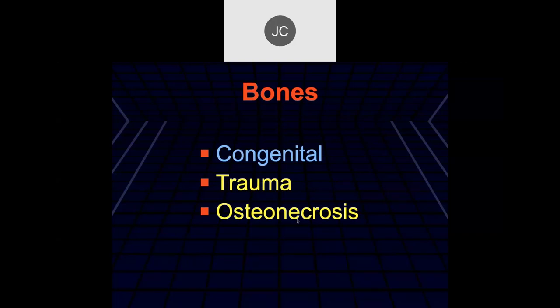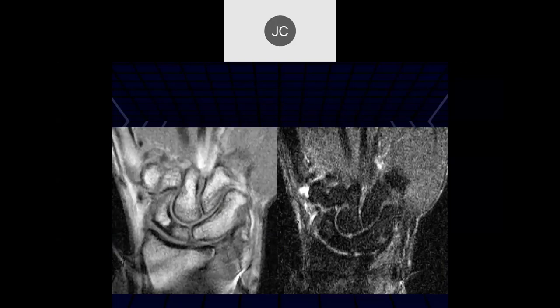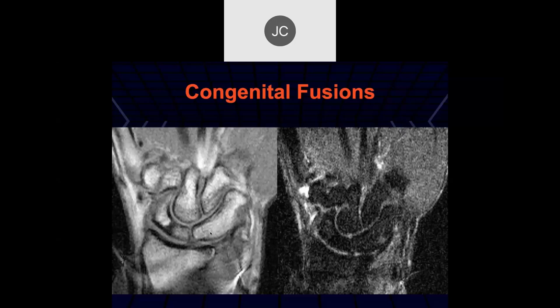Let's talk about bones. Looking at the lunate and triquetrum, they look like they're fused. Here you have a fusion between the scaphoid and the lunate, and a very elongated triquetrum, with a single joint involving the proximal carpal row. This is congenital fusion. Congenital fusions are not rare in the wrist, especially in kids.